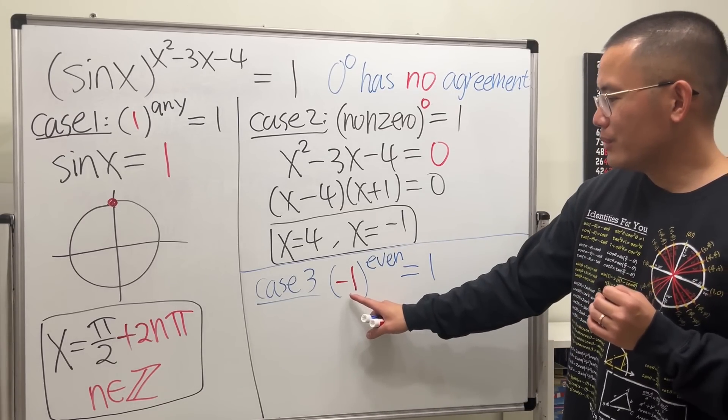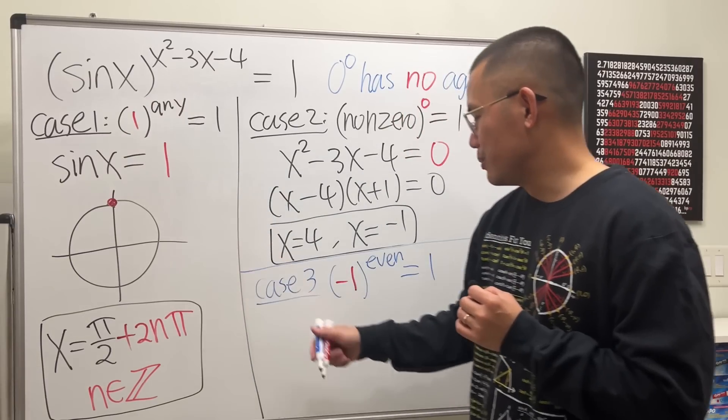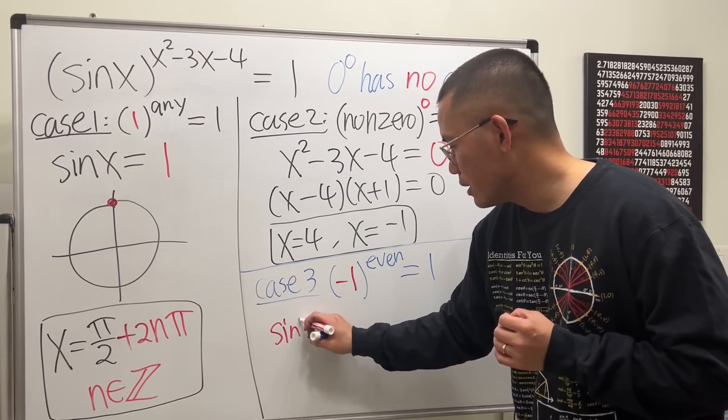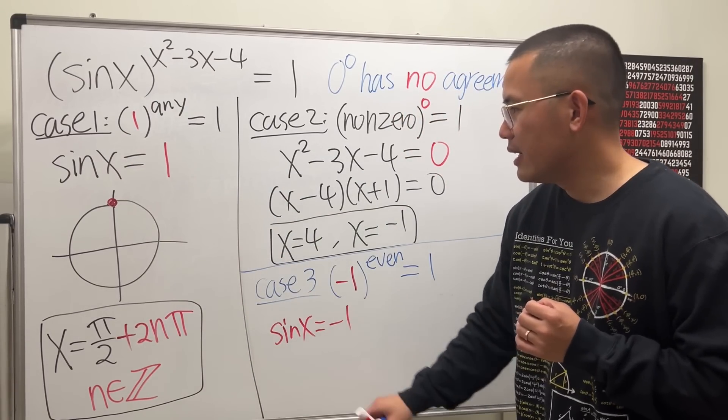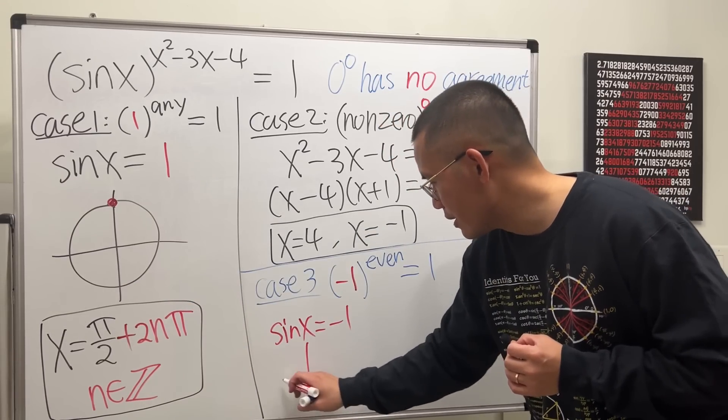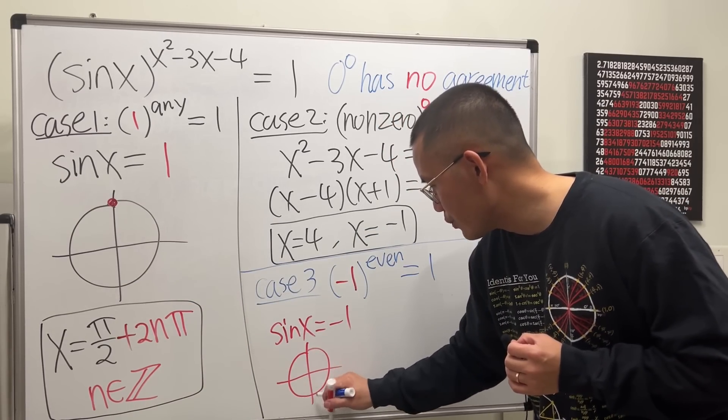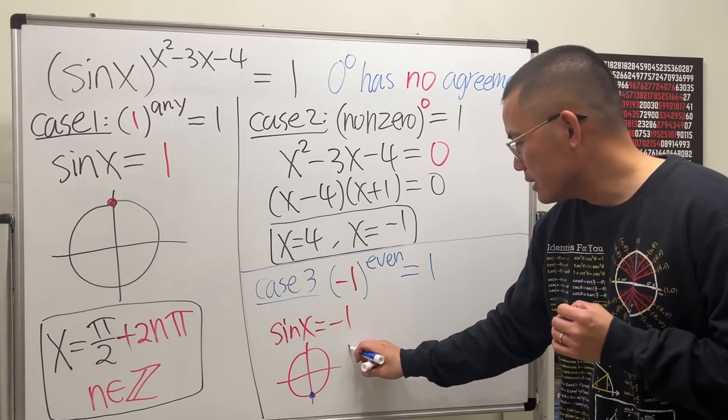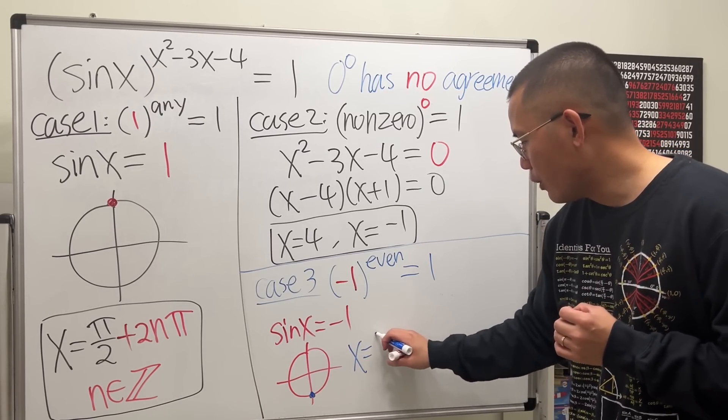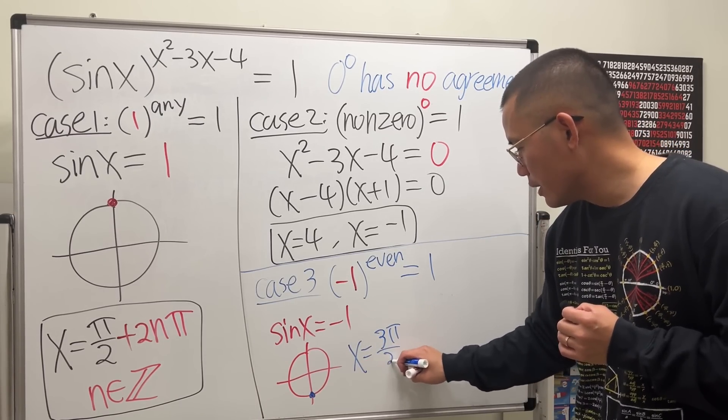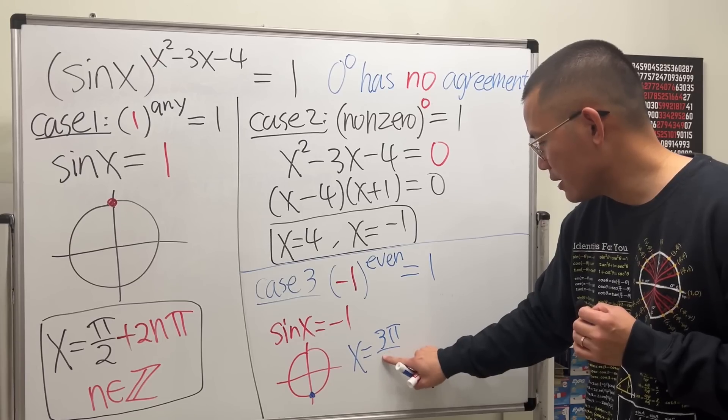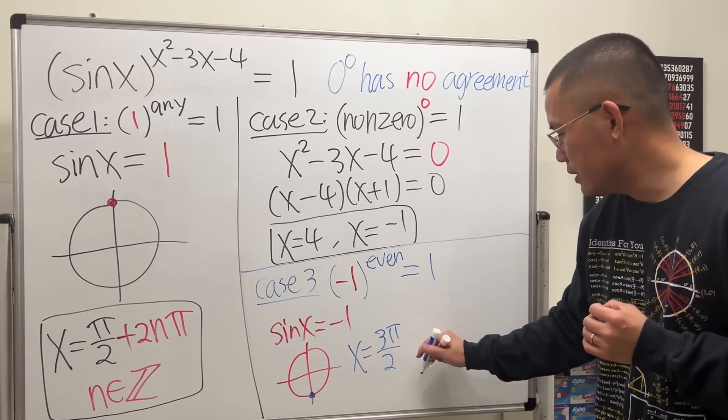This is also going to be 1. Well, if you set sine x to be negative 1, then we're talking about this point right here on the unit circle, right here. So that means x will be 3π over 2, and then again, we just add 2nπ to it.